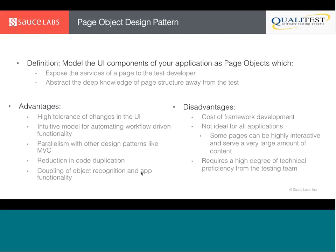Some disadvantages include the cost of framework development — you have to integrate Page Object into your framework and use it everywhere. Also, it's not ideal for all applications. For example, if your app is dynamically changing, like a game, you wouldn't want a lot of Page Objects. But for something like a web email page or basic website, the Page Object pattern proves very useful. In AJAX apps, it's useful to use Page Objects as sub-parts of your application.